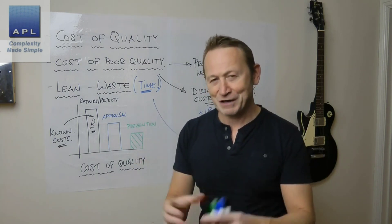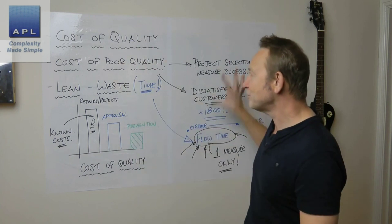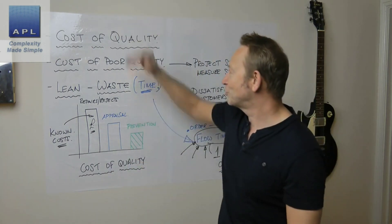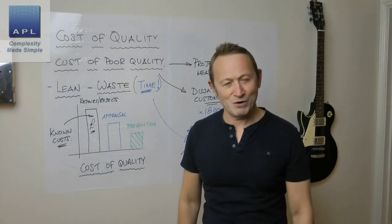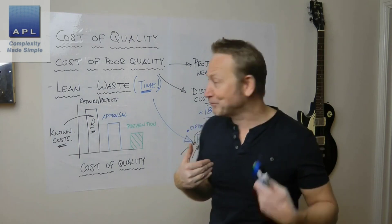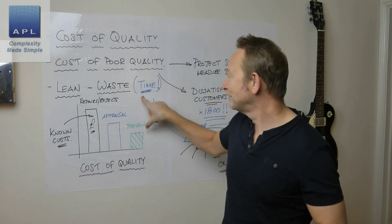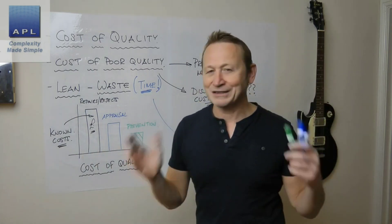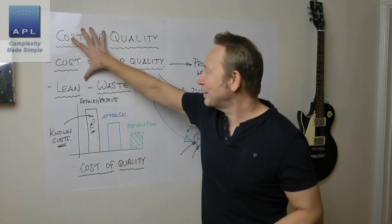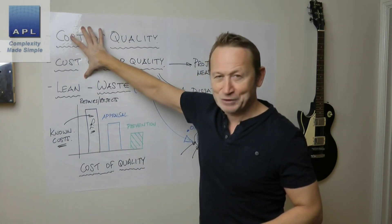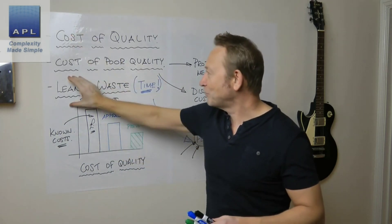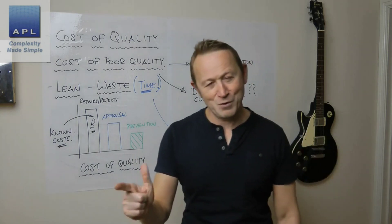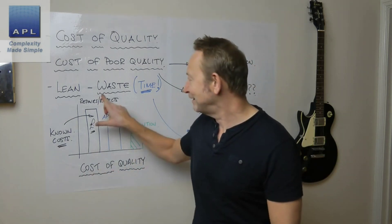Your continuous improvement projects — whether six sigma, lean, or otherwise — need to be selected carefully. You can use cost of quality, cost of poor quality, or lean waste removal from the system. My favorite, even as a six sigma person, is lean waste because there's no argument about time — nobody debates the cost of dissatisfied customers, it's easy to work out. Keep it simple, easy to understand, and get everybody pushing in the right direction: that's the essence of cost of quality, cost of poor quality, and lean waste.